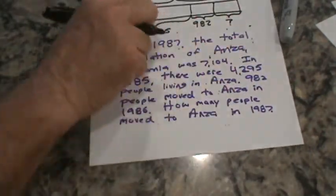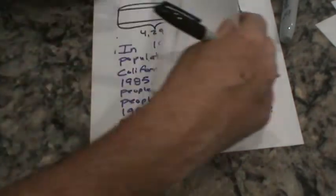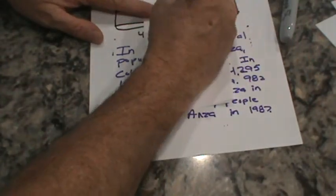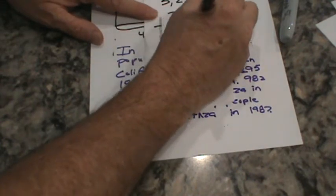Well, now we can determine how many people moved in here by subtracting the whole from this part. Ready? 7,104 minus 5,277. So go ahead and pause.